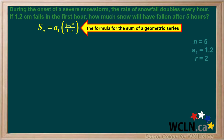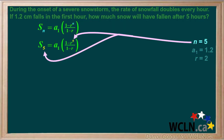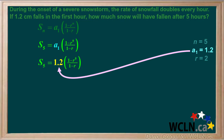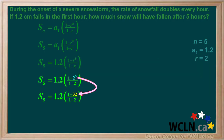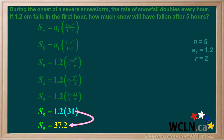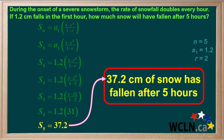We'll start by writing the formula for the sum of a geometric series. The total snow that has fallen after five hours will be the sum of this series, Sn. We'll put in 5 for each n in the formula, 1.2 for the first term a1, and 2 for each r in the formula. 2 to the fifth power is 32. 1 minus 32 over 1 minus 2 comes out to 31, and the sum S5 works out to 37.2. So we can state that 37.2 cm of snow has fallen after five hours.